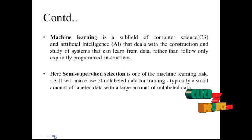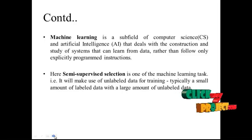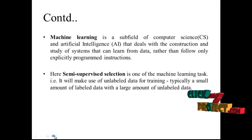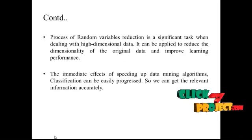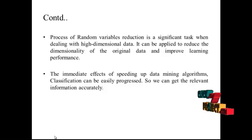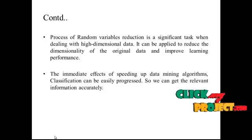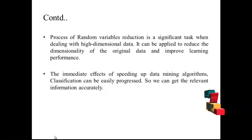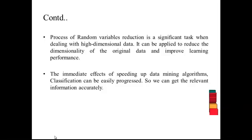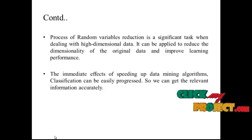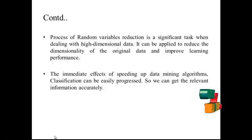In machine learning, a subfield of computer science and artificial intelligence, systems can learn from data rather than follow only explicitly programmed instructions. Semi-supervised selection is one of the machine learning tasks that makes use of unlabeled data for training — typically a small amount of labeled data with a large amount of unlabeled data. Reducing random variables is a significant task when dealing with high-dimensional data. It can reduce dimensionality and improve learning performance, speeding up data mining and classification algorithms to extract relevant features accurately.